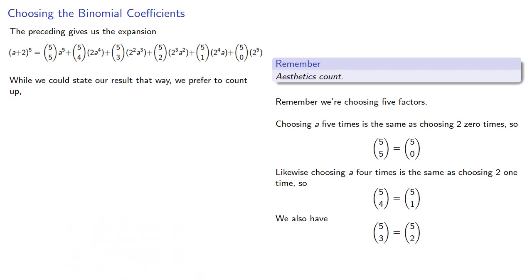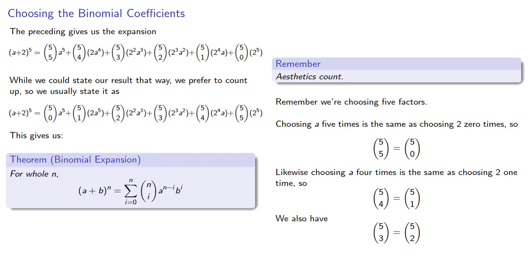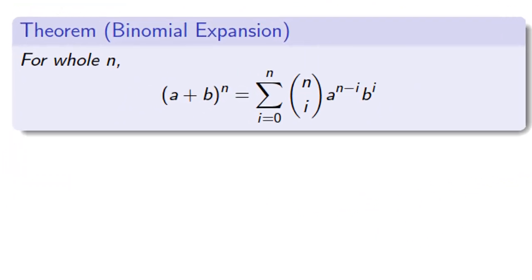And so we can restate our result. This gives us our binomial expansion. The key features in this expansion are that the sum of the exponents is n, the power on the binomial, and a coefficient is n choose i, which we can view as the power on one of the factors.